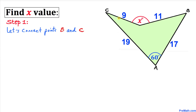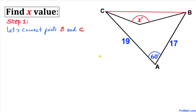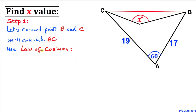Our very first step is to connect points B and C. Let's go ahead and do that. Here's our much nicer looking diagram, and now we are going to calculate the side length BC.